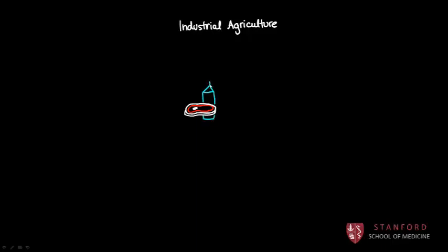Most of the meat, milk, eggs, and even most of the fruits and vegetables that we would buy in a typical supermarket would have been produced in this way.